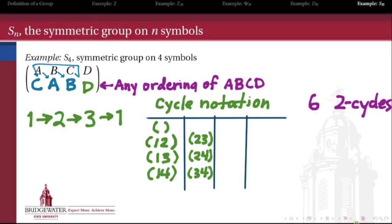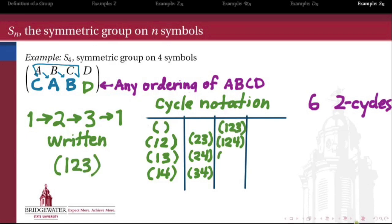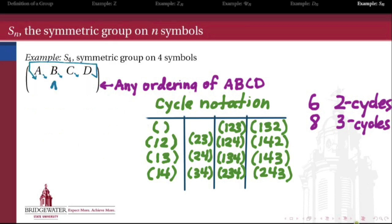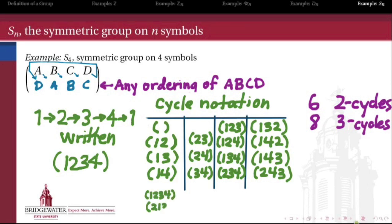We can extend the length of our cycle: take the first symbol to where the second was, the second to where the third was, and the third back to where the first was. In cycle notation that's (1 2 3) — a three-cycle. There are eight distinct three-cycles in the symmetric group on four symbols; each takes three of the symbols and cycles them while the fourth stays fixed. We can also do four-cycles, shifting all four elements one place, written as (1 2 3 4). There are six distinct four-cycles in this group.